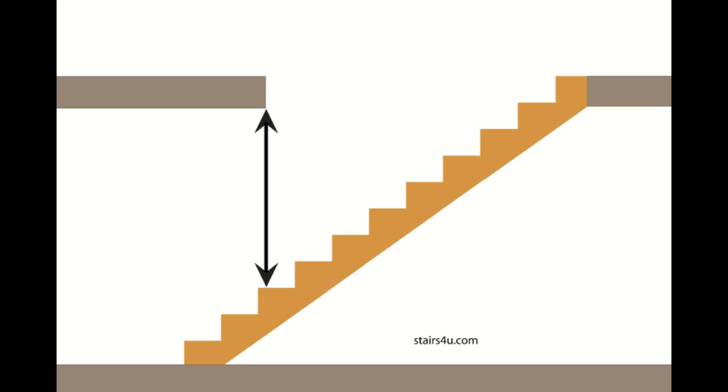However, let's just say that you measure this distance and it's less than seven foot three inches just to be on the safe side. If that's the case, then you will need to go to the next step, which will be placing a straight edge on top of the stair stringer.